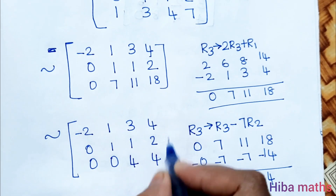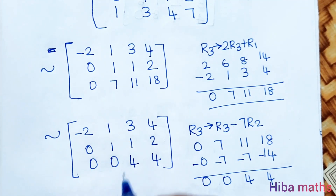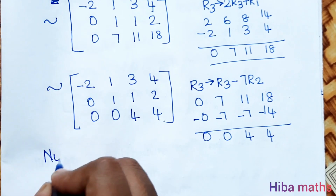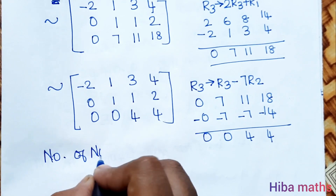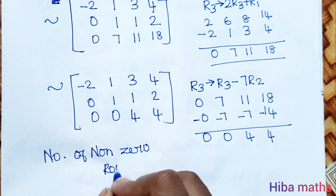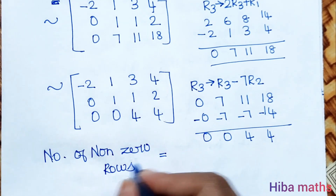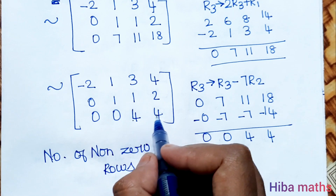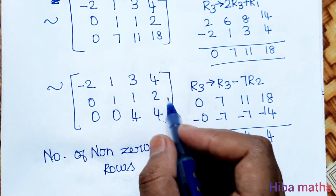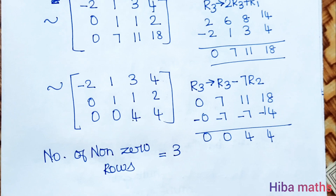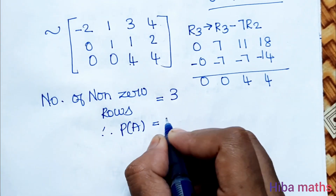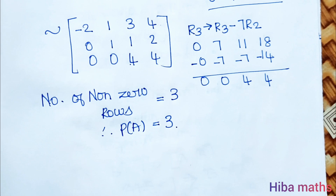Now checking how many rows are in row echelon form. The number of non-zero rows: here is a number, here is a number, here is a number — so 1, 2, 3 non-zero rows. Therefore, the rank of A is 3.